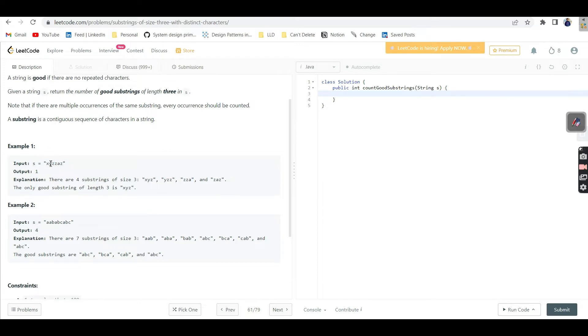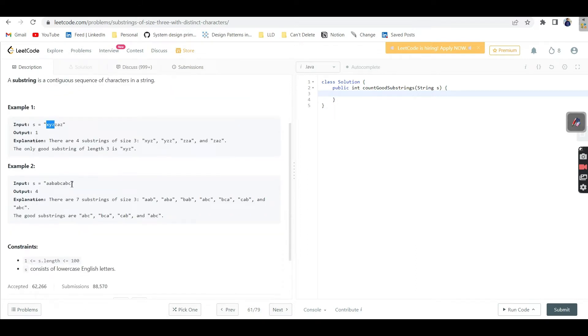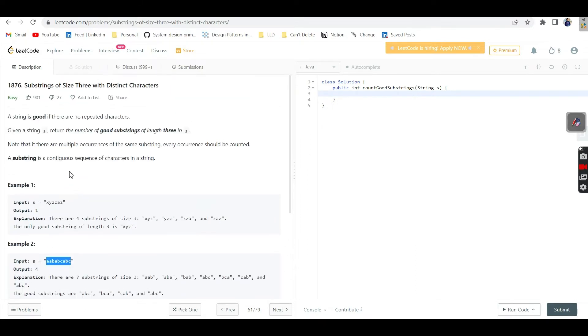This substring has no repeated characters, so the count is 1. Then we take y, z, z - here z is repeated, we ignore. Then again z, z, a - here also z is repeated, we ignore. And again z, a, z - here also z is repeated, we ignore. After completing this whole string, we got only one substring where there are no repeated characters. We need to basically return the number of substrings where there are no repeated characters available.